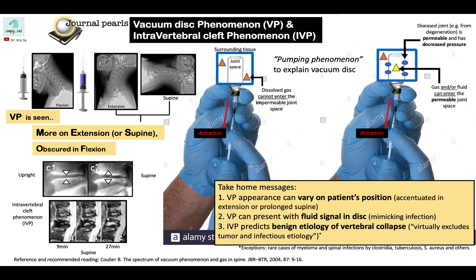Our take-home messages for this talk: first, vacuum disc phenomenon can vary on the patient's position — it is accentuated in the extension or supine position. Second, vacuum disc phenomenon can present with gas or fluid signal within the discs, and if fluid signal is seen within the disc it may mimic infection. So it's important to look for secondary signs to determine if it is indeed an infection or just a degenerative change.